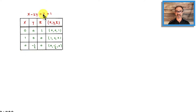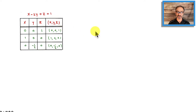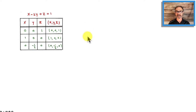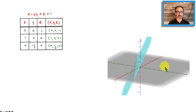Setting x and z equal to 0, you get minus 2y equals 1, so y equals negative one-half. My lecture videos are pre-made notes to keep things clean and save recording time. Here's a 3D graph using GeoGebra, which is free software. The plane crosses the x-axis at 1, the z-axis at 1, and the y-axis at negative one-half.